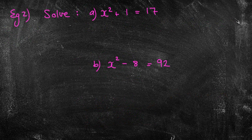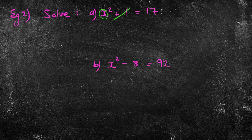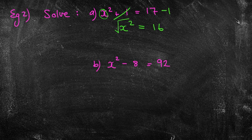The next question is a bit more challenging now. So how would we normally do this? Well, we want to get the x by itself, right? So what's the opposite of plus 1? Well, it's minus 1. So I'm left with x squared equals 16. I can now square root both sides to get x equals plus or minus 4.